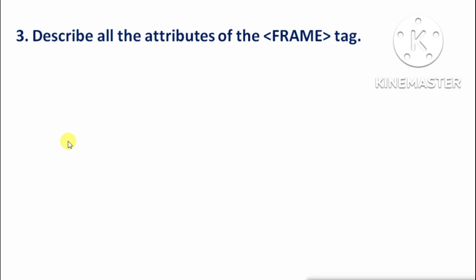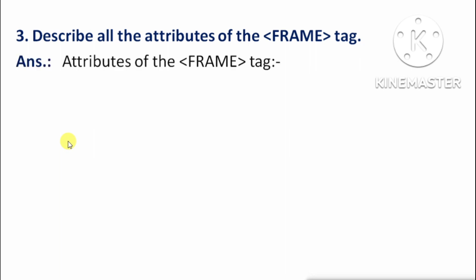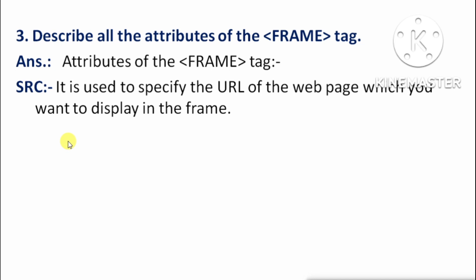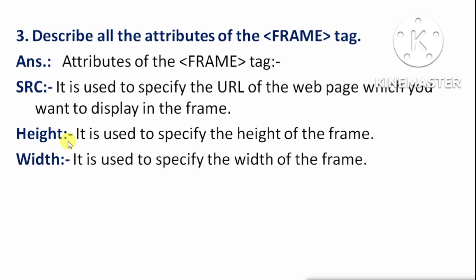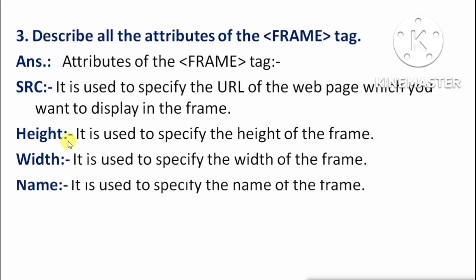Next: Describe all the attributes of the frame tag. Frame tag ke sabhi attributes ko describe kariye. First is SRC — jo ki webpage ka URL specify karta hai. Second is height — jo ki frame ke height ko specify karta hai. Third is width — jo ki frame ke width ko specify karta hai. And next is name — yeh frame ke name ko specify karta hai.